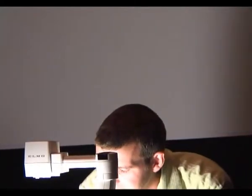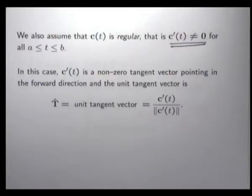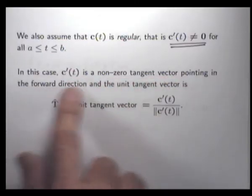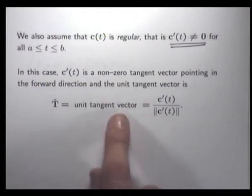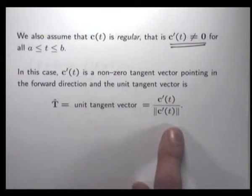Now, another important piece of information that we're going to assume is that the vector function c is regular in the sense that the derivative c'(t) is nowhere the zero vector. Why? Well, we're going to divide by the length of c dash at some point, so we don't want to divide by zero. In this case, c'(t) is a non-zero tangent vector pointing in the forward direction. So to produce a unit tangent vector T hat, all we do is take the tangent vector and divide by its length. T = unit tangent vector = c'(t) / ||c'(t)||.